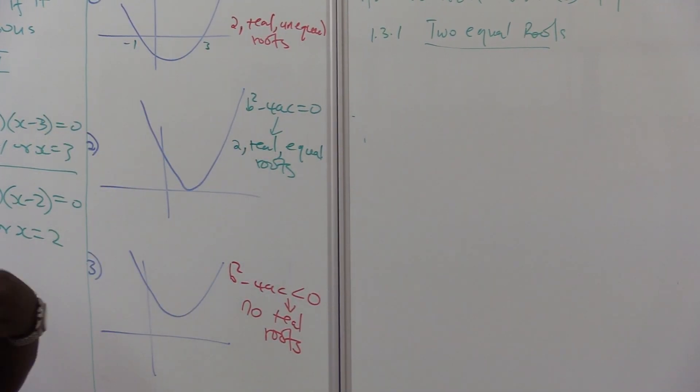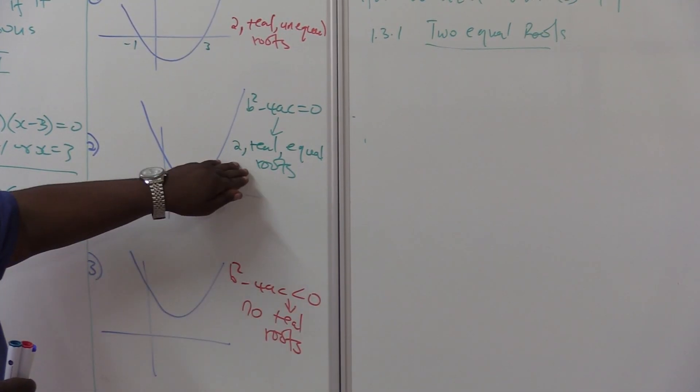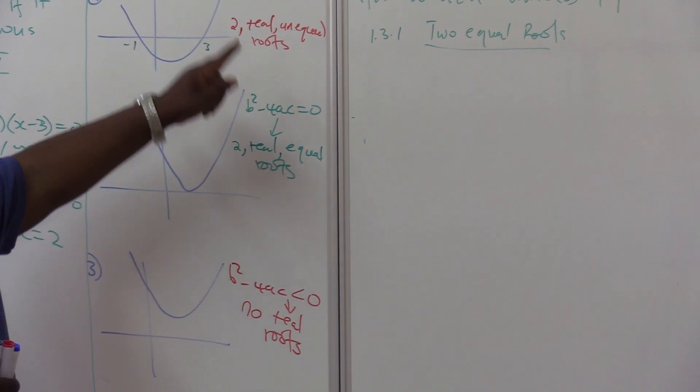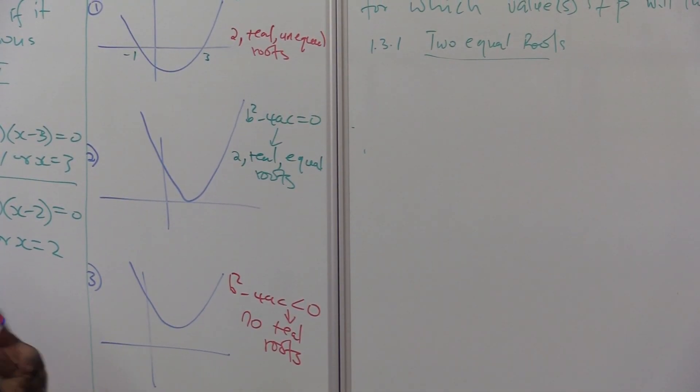If you want to master this section called the nature of roots, you must master these three diagrams. The keywords to look for in exam questions are: non-real roots or imaginary roots, two real and equal roots, and two real and unequal roots. When you read the question, you look for these keywords — equal, unequal, non-real or imaginary.